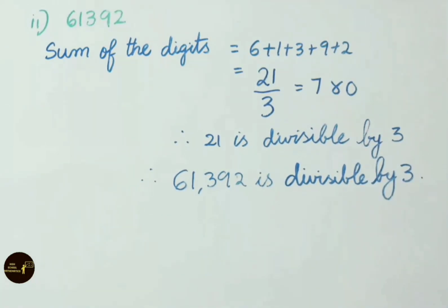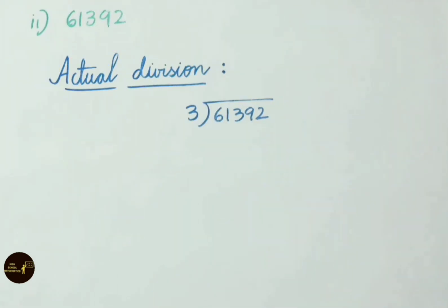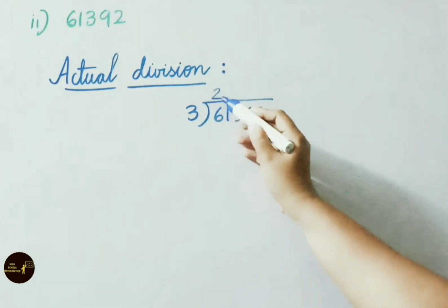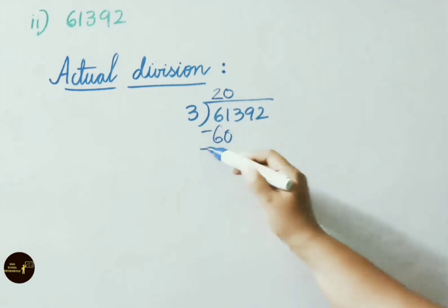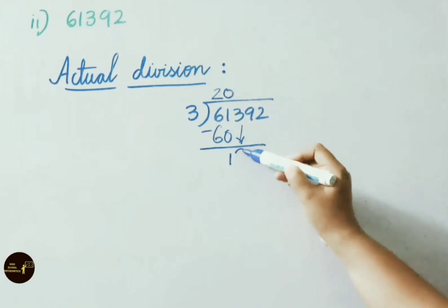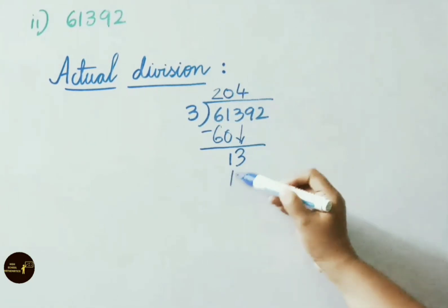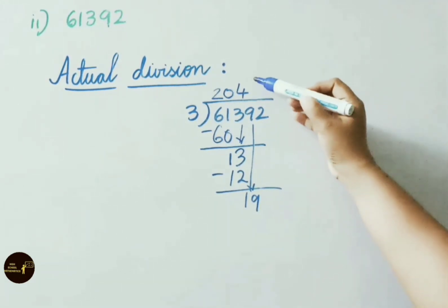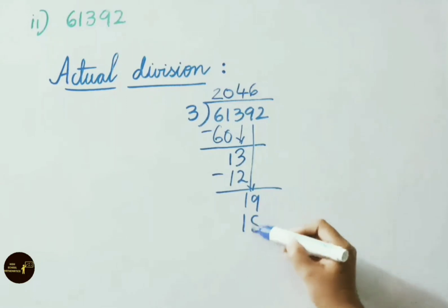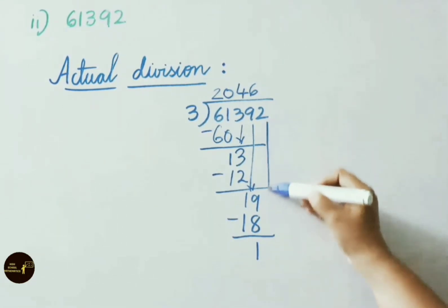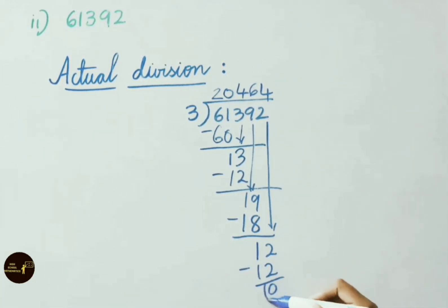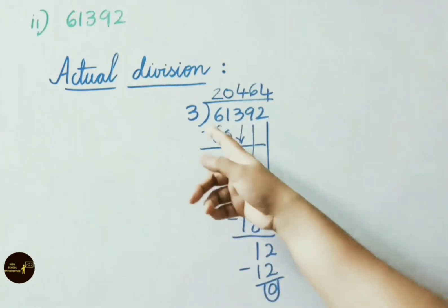Now let us verify this by doing actual division. 61,392 divided by 3: 3 twenties are 60, so 61 minus 60 is 1. Get down 3; 3 fours are 12, so 13 minus 12 is 1. Write down 9; 3 sixes are 18, so 19 minus 18 is 1. Write down 2; 3 fours are 12, so 12 minus 12 gives remainder 0. Therefore the given number 61,392 is divisible by 3.